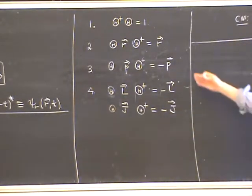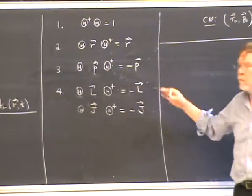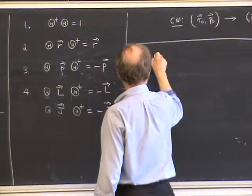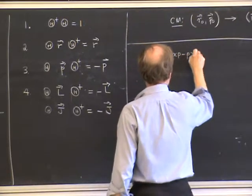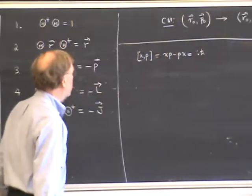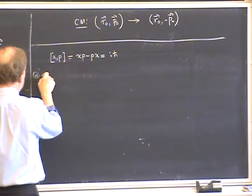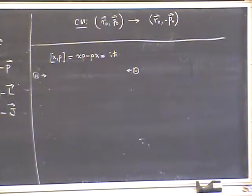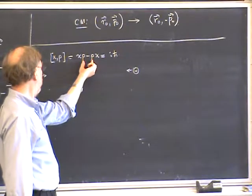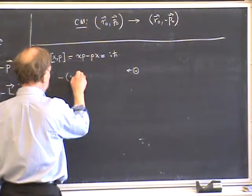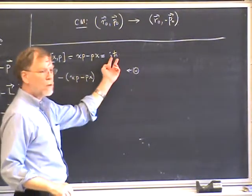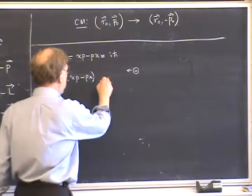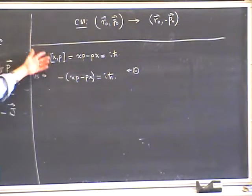Given these requirements, one can show rather easily that the time-reversal operator cannot be a linear operator. Working in one dimension with X and P and their commutation relation XP − PX = iħ: if we multiply on both sides by θ and θ†, the left-hand side changes sign because P changes sign under time reversal, giving minus the commutator. But the right-hand side is just a c-number, so if theta were unitary it would just pass through, giving iħ on the right-hand side. These two statements are in obvious conflict.